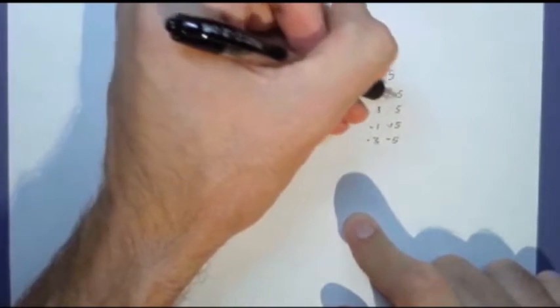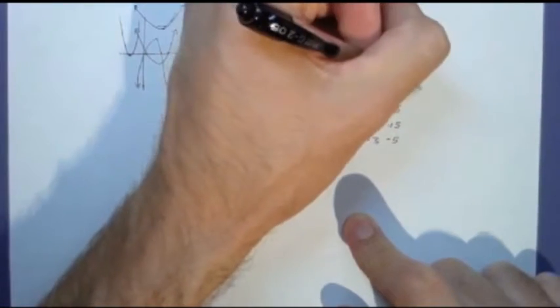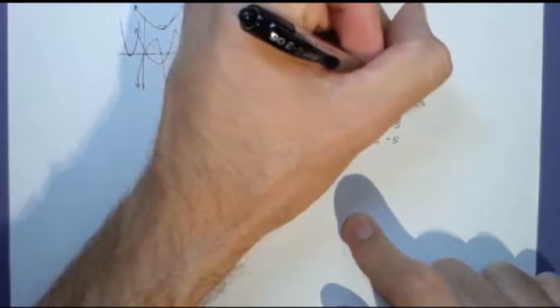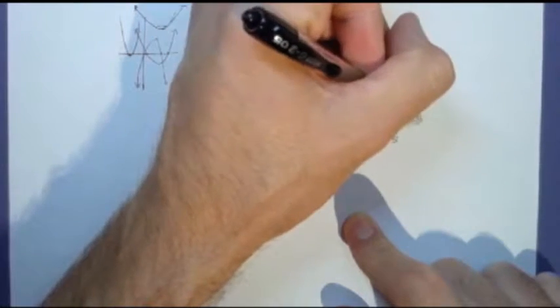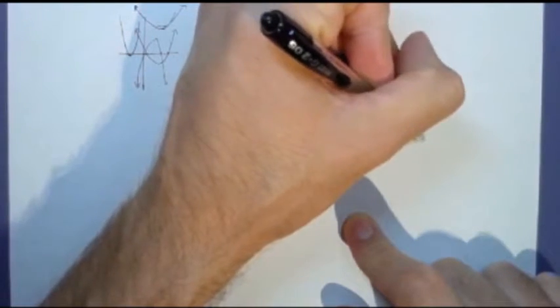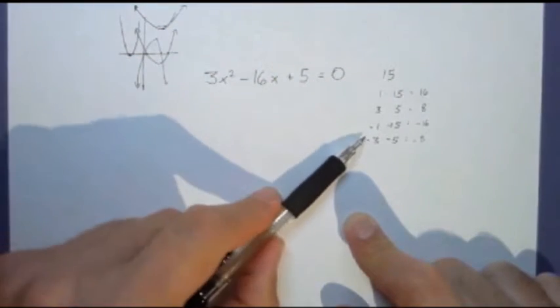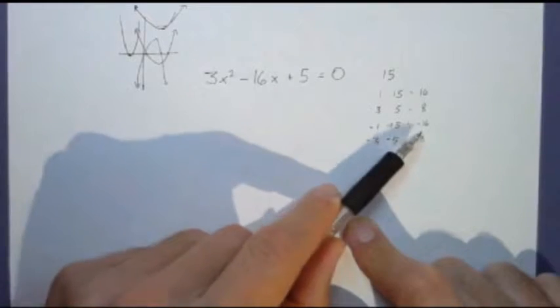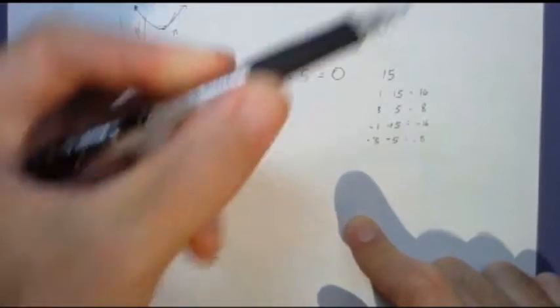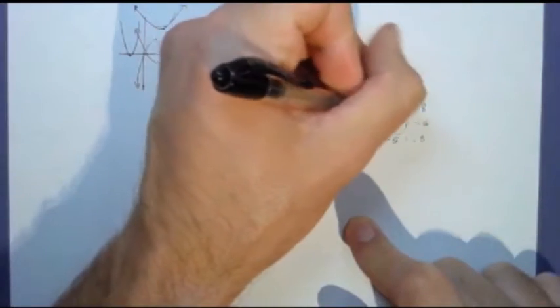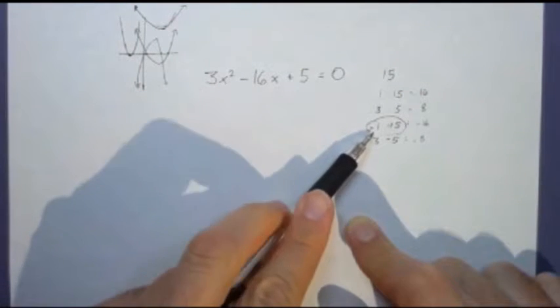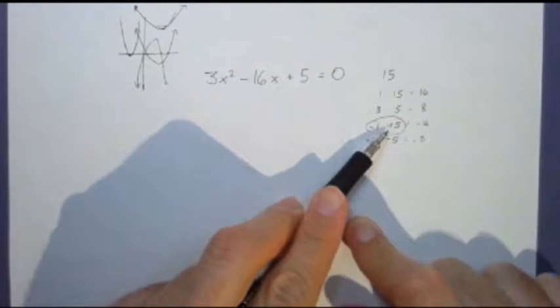With the sum, the possible outcomes we're getting are: we can get a sixteen, an eight, a negative sixteen, or a negative eight. These are the sums that the factors of fifteen will make. So to make a negative six, I need to use a negative one and a negative fifteen.